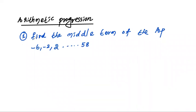Listen here, first question: Find the middle term of the AP: minus 6, minus 2, 2, and so on up to 58.